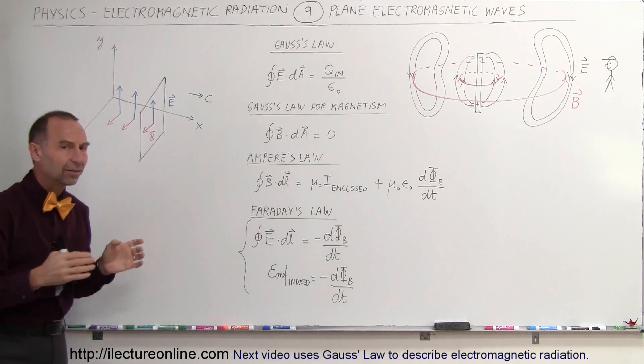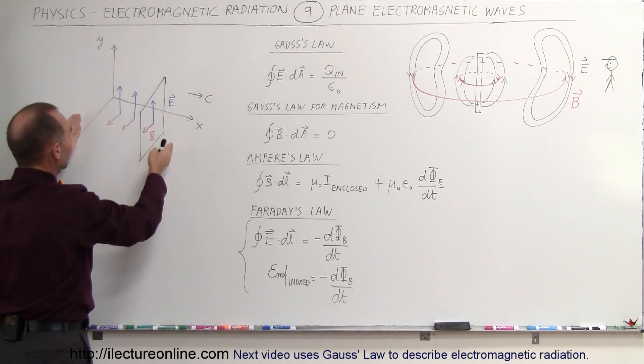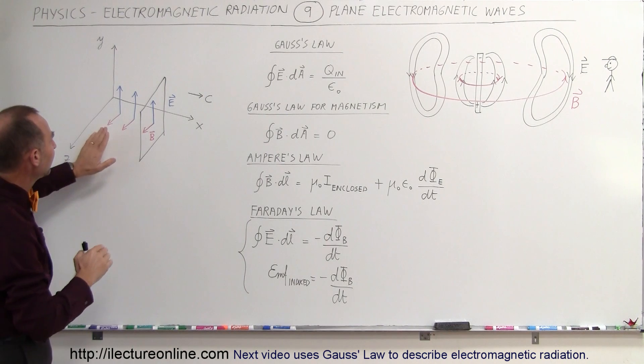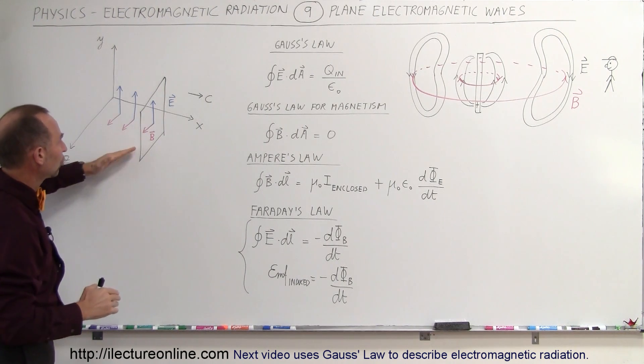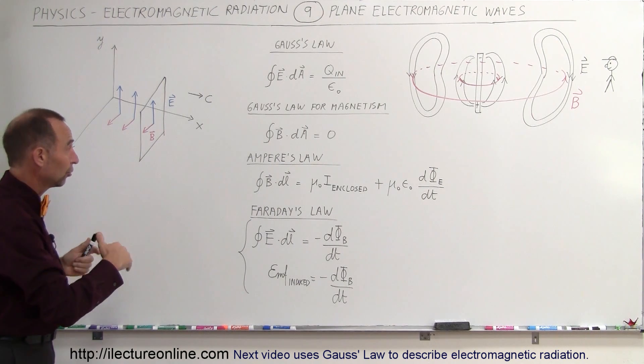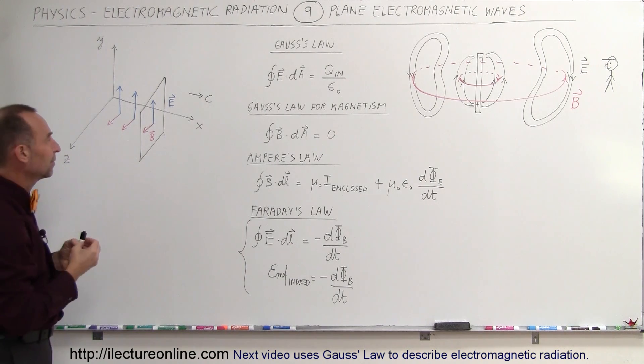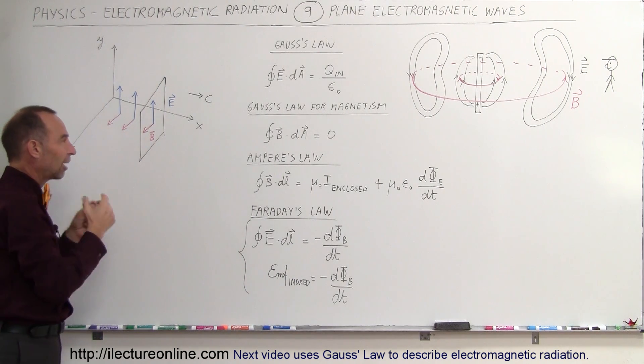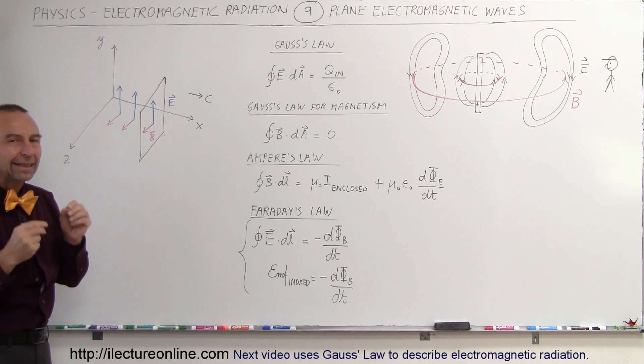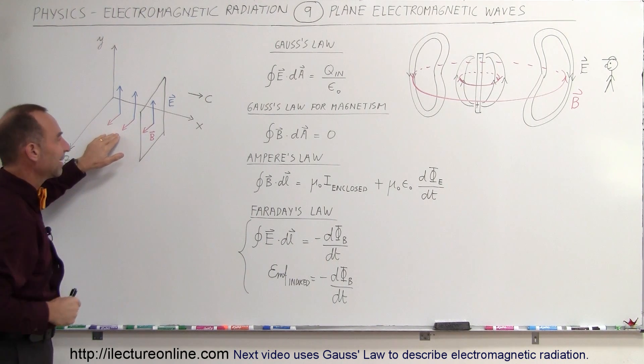Secondly, Gauss's law for magnetism, which says there are no such thing as monopoles. Again, the same thing is if we completely encircle a section of this electromagnetic radiation by a Gaussian surface and we integrate the magnetic field strength along the surface times the area of the surface, we expect that also to equal zero because we don't expect there to be any monopoles, any sources, singular sources of electromagnetic radiation or I should say magnetic field oscillations.